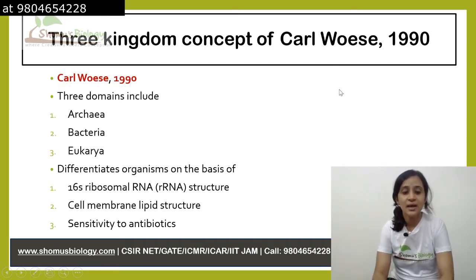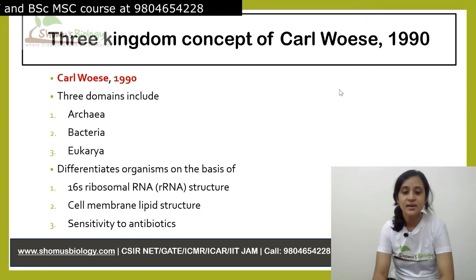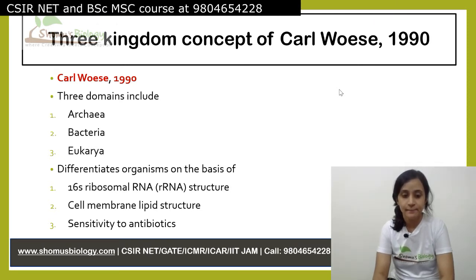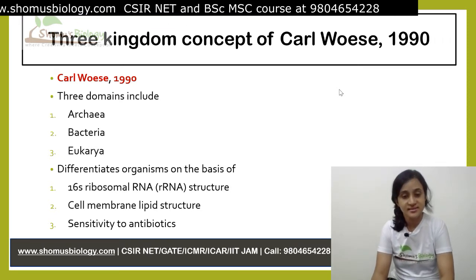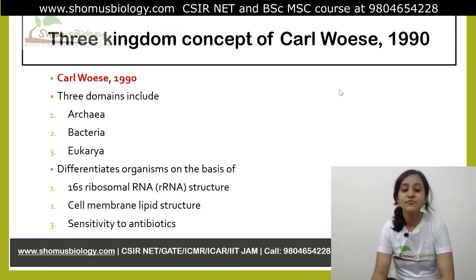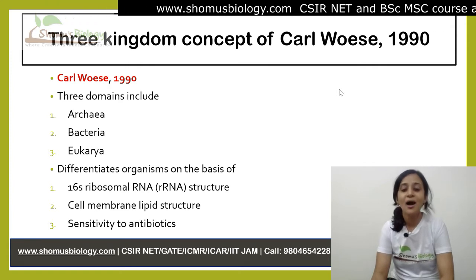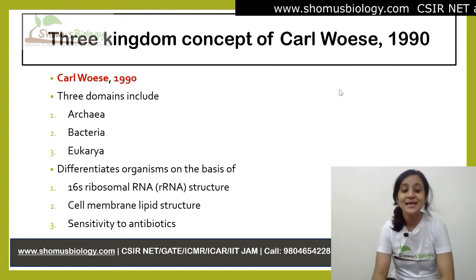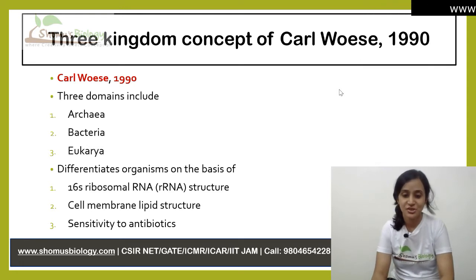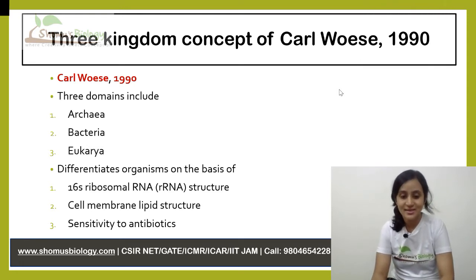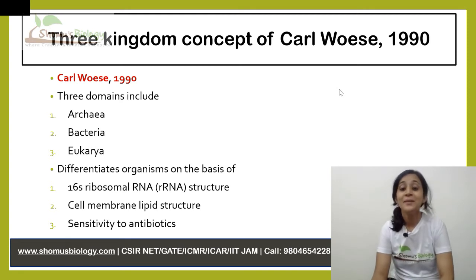Three Kingdoms Concept of Carl Woese 1990. The three domain system was first introduced by Carl Woese in 1990. That's why it's called Carl Woese's Classification. This classification system is also known as three domain classification because it divides the life forms into three domains.